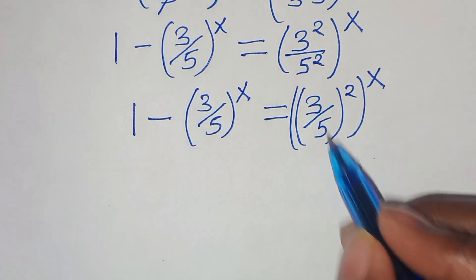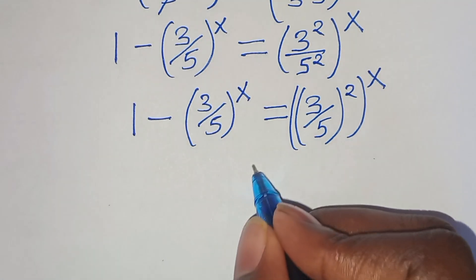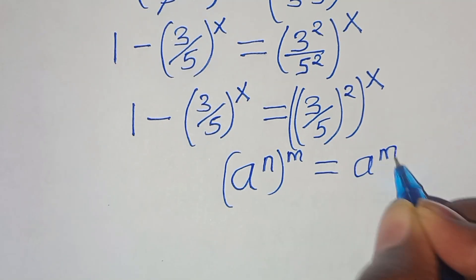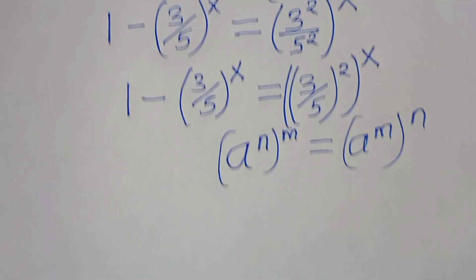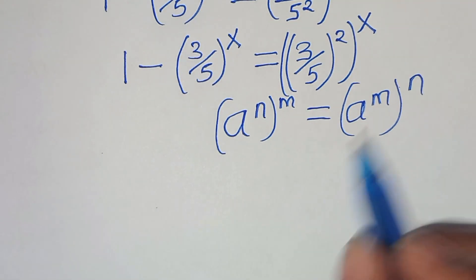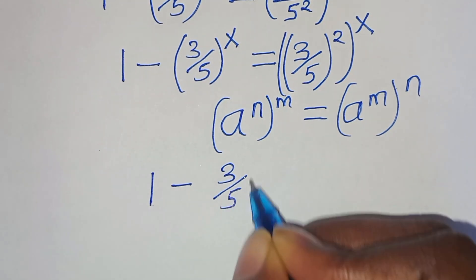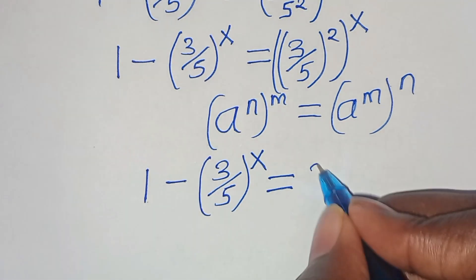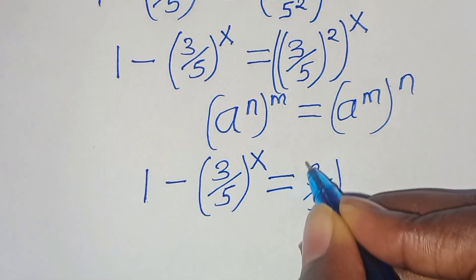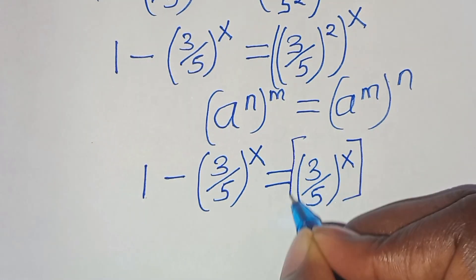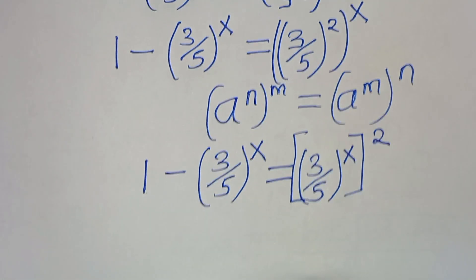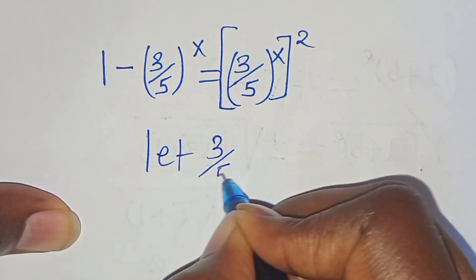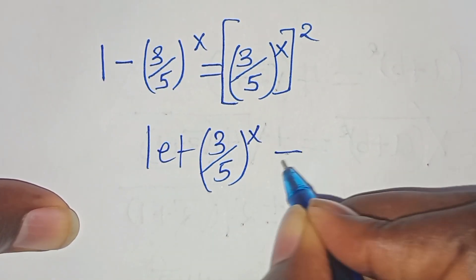The next step: (3/5) raised to the power of 2, raised to the power of x, is in the form of a^n raised to the power of m, which can be expressed as a^m raised to the power of n. Applying this exponent property, we have 1 minus (3/5)^x equals (3/5)^x raised to the power of 2. Now let (3/5) raised to the power of x equal u.